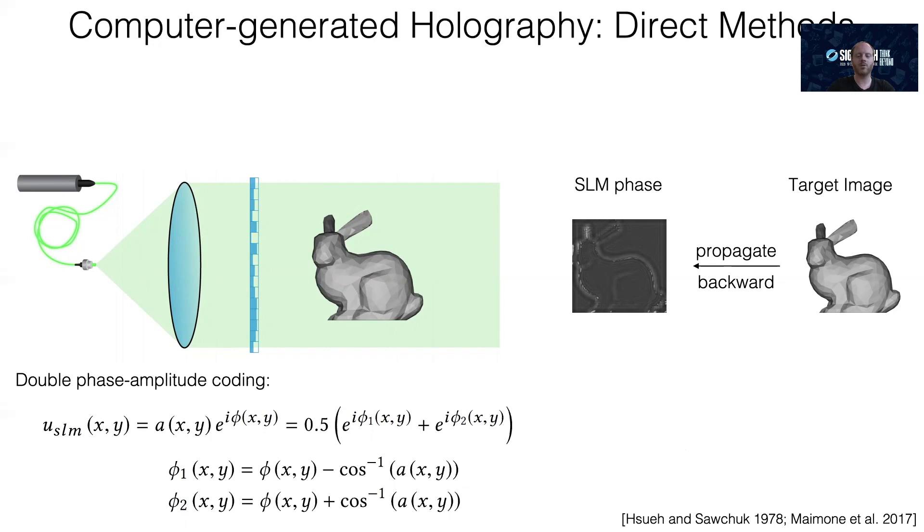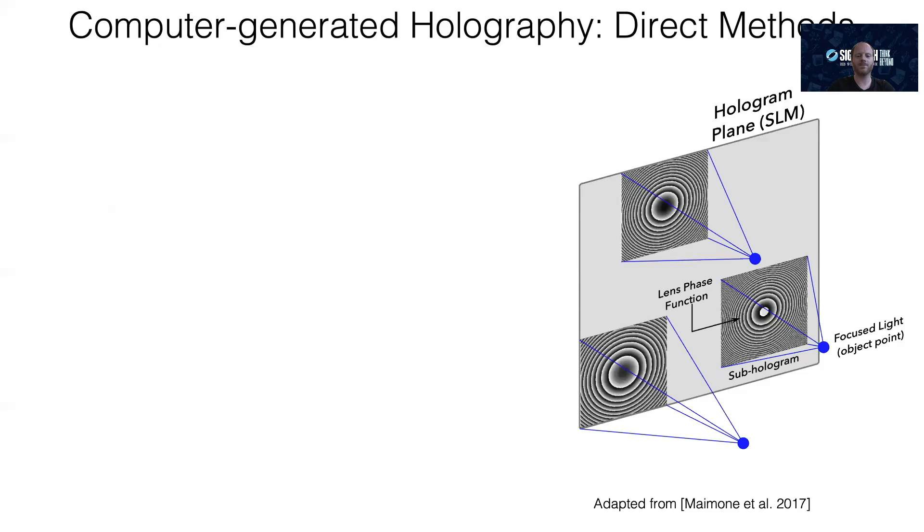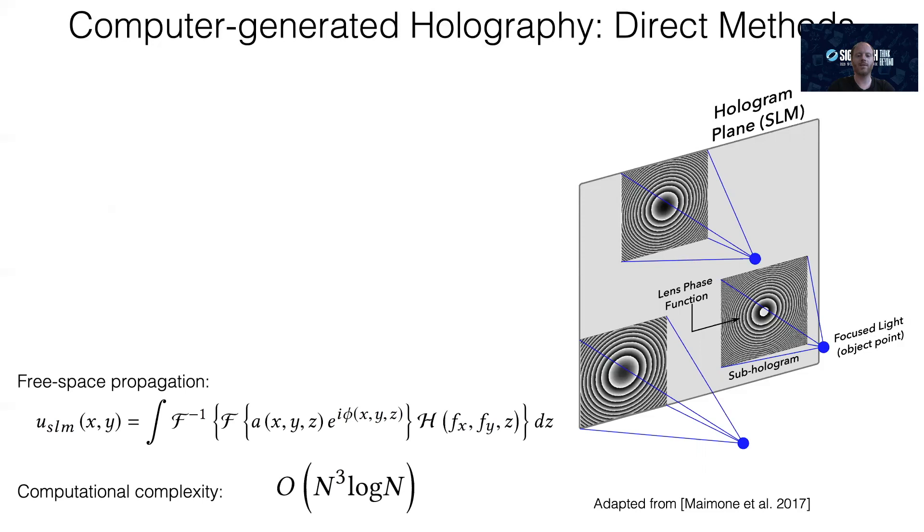Several heuristics also exist to convert a complex-valued field into a phase-only field. The double-phase amplitude coding method is one of them and represents a complex field as the sum of two phase-only fields that are interlaced. Note that this is a heuristic, and it doesn't always work well. For a 3D hologram, we can represent the target scene as a point cloud and propagate each of the points to the SLM plane, as depicted here. But even if we propagate each depth layer at a time, the computational complexity of this approach is often prohibitive, so doing this fast remains an open research challenge.